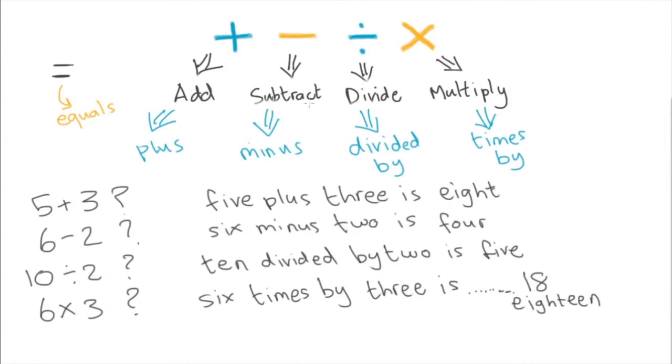So, just to recap here. Add, subtract, divide, multiply, and equals. Equals only has one word. The other four, we can use two different words, and we usually use these ones. Five plus three. Six minus two. Ten divided by two. Six times by three.